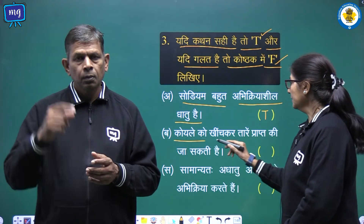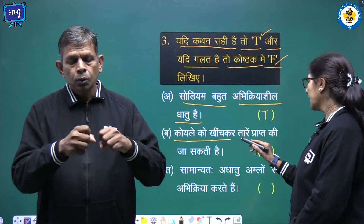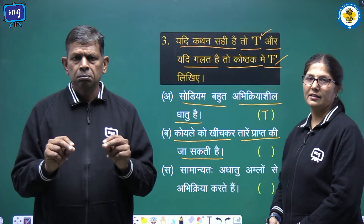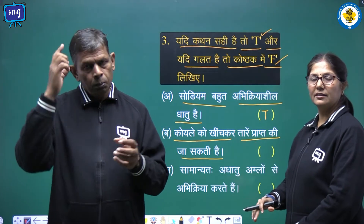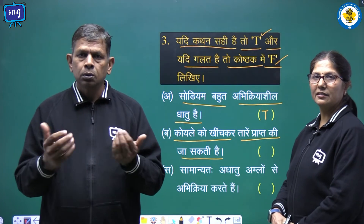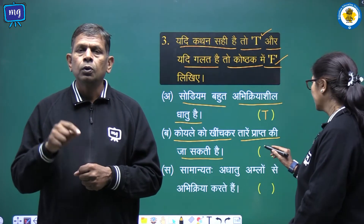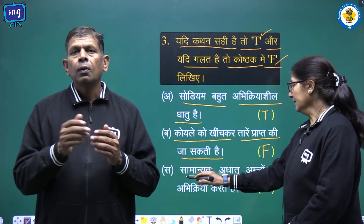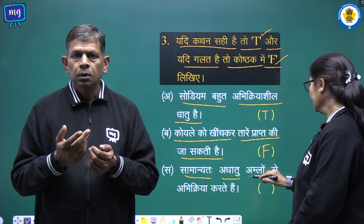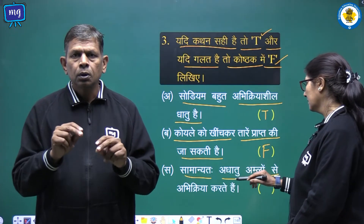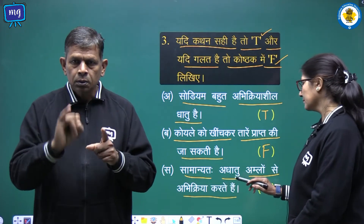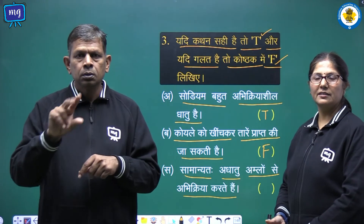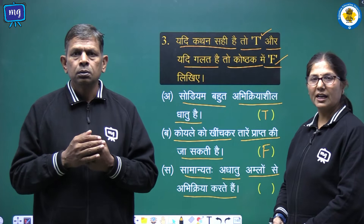B - Koyle ko kheench kar taare prapt ki ja sakti hain? Nahin. Koyle ko kheench kar taare prapt nahin ki ja sakti, so we will write F.